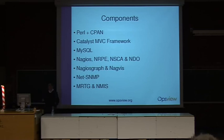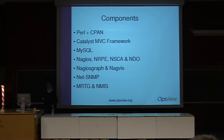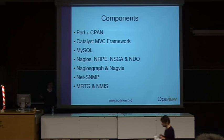In terms of what's in OpsView, it's mainly developed in Perl, so we have a lot of Perl and CPAN modules. We use Catalyst, which is a web framework — the application is written in Catalyst. MySQL is the database sitting underneath it. In fact, we have four separate databases comprising the OpsView system: one containing configuration, one containing current status information, a data warehouse, and a reporting database. We bring together Nagios and a bunch of associated Nagios tools or projects, and also integrate SSNMP, MRTG, and NMIS, though that's not a complete list.